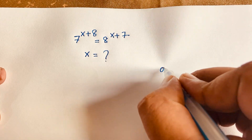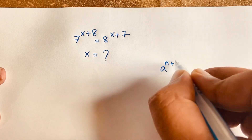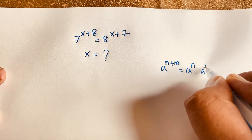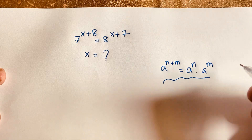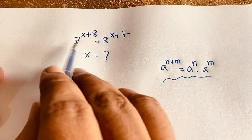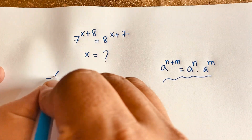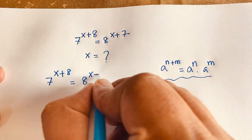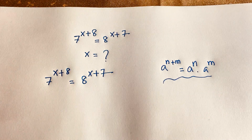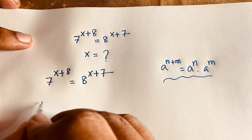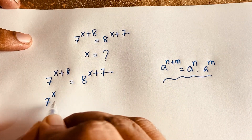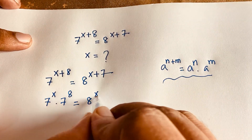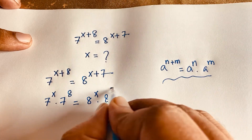We know that e to the power n plus m, according to exponential law, it will be e to the power n times e to the power m. According to this law, I can see easily this question here is 7 to the power x plus 8. I write down this again: 8 to the power x plus 7. So according to this law, it will be 7 to the power x times 7 to the power 8 is equal to 8 to the power x times 8 to the power 7.